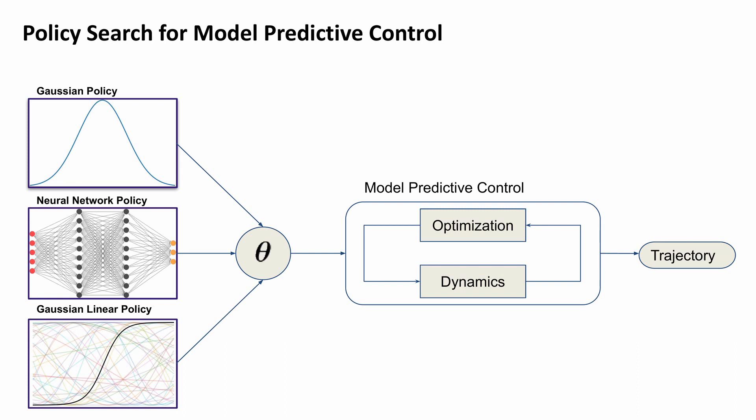Our key insight is that Policy Search is useful for making high-level decisions for MPC, allowing automatically learning and adapting how to optimize parameters.